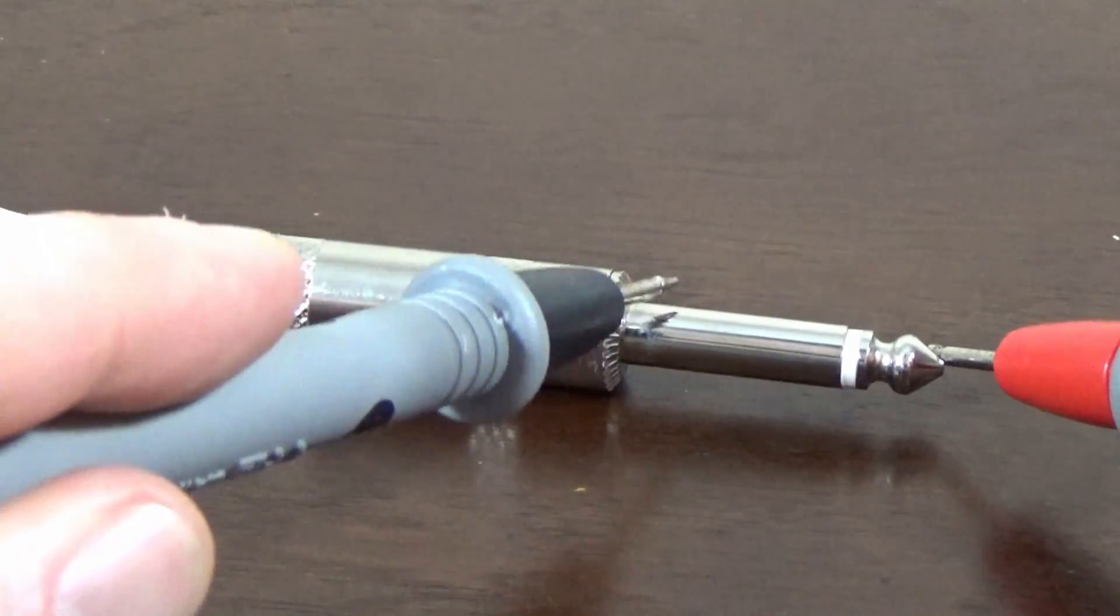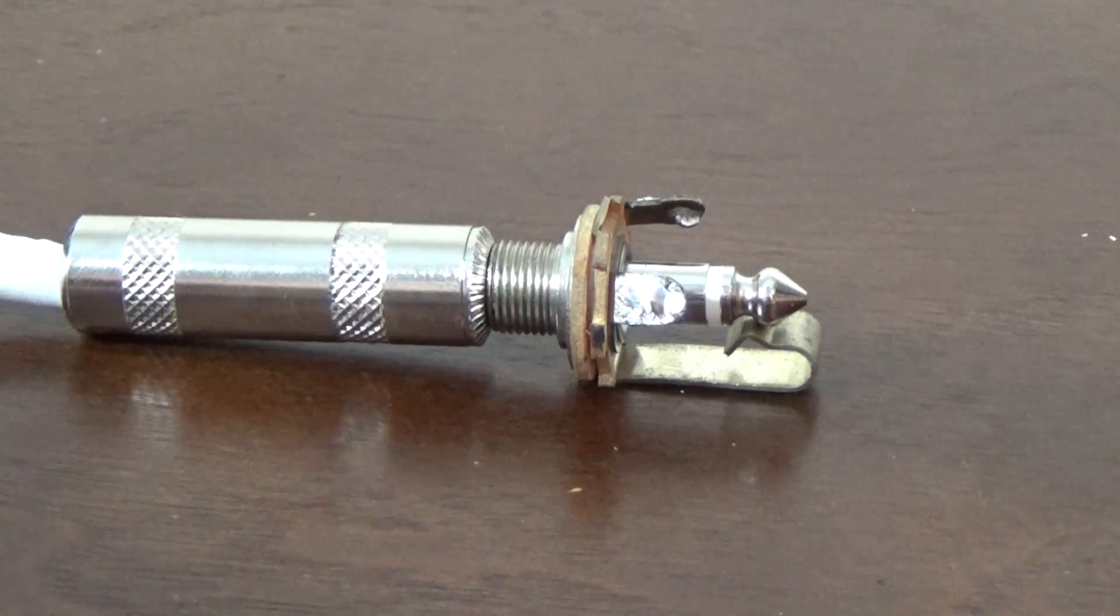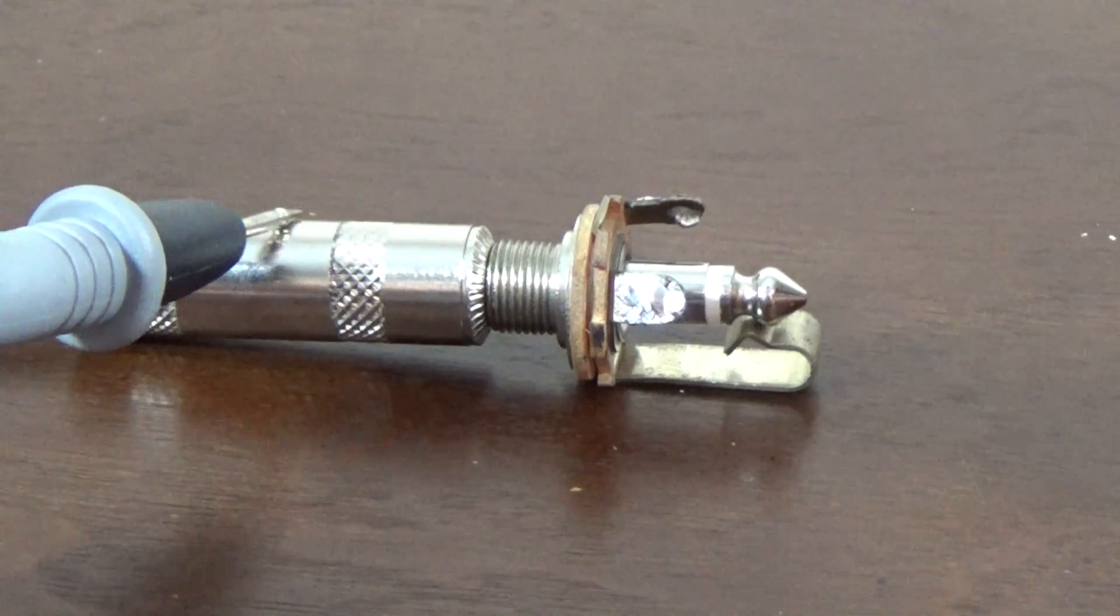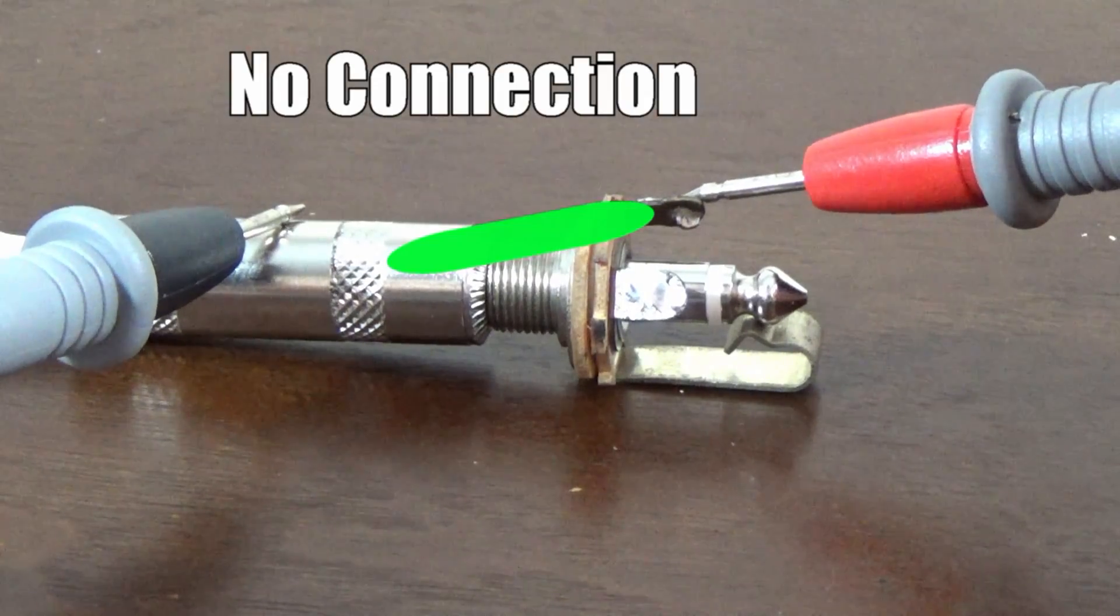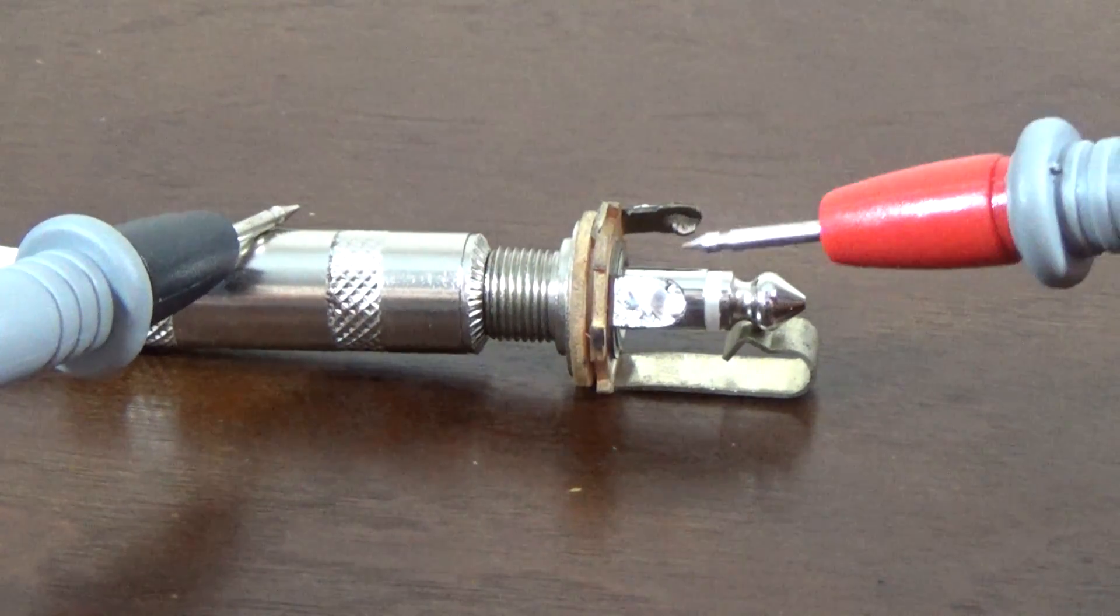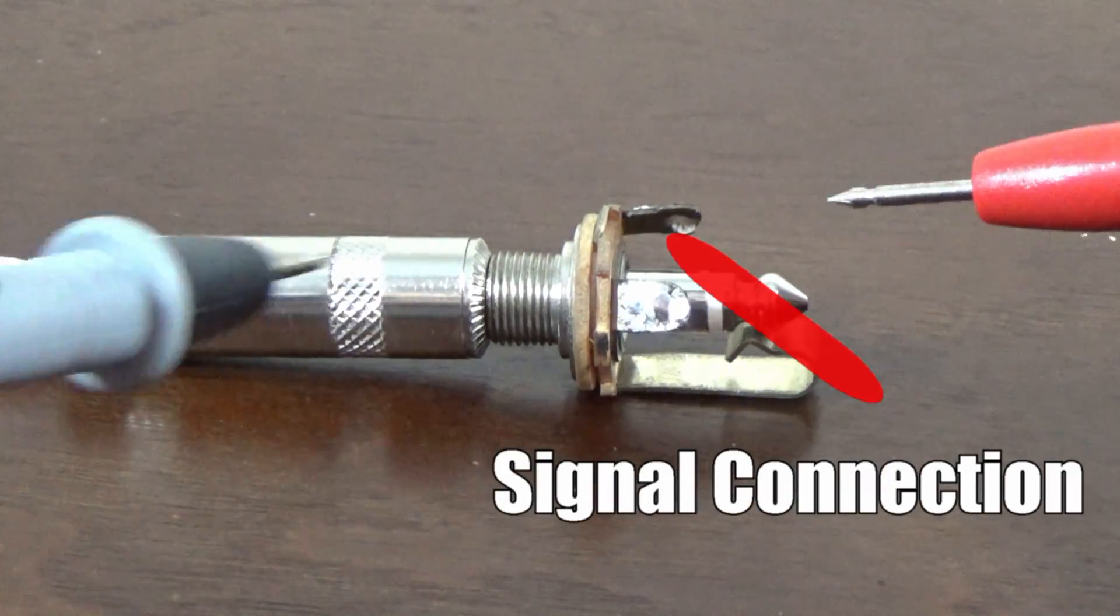We can now determine which connections are the signal and the ground. Go ahead and connect the guitar cable to the jack. Then probe either the shield or the tip and try each connection. When there's a connection and the meter goes off we know which is the path to the ground or the signal.